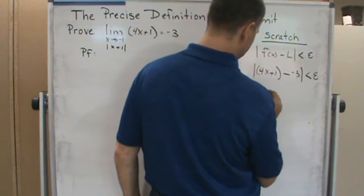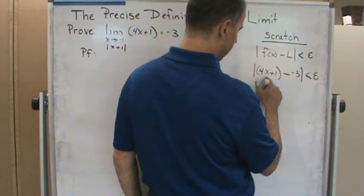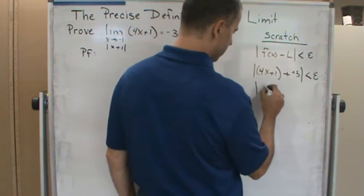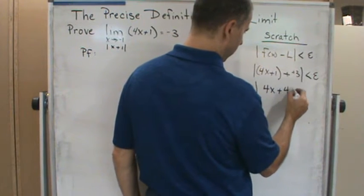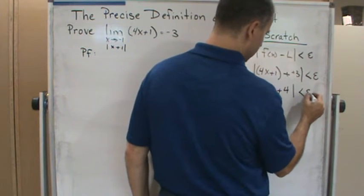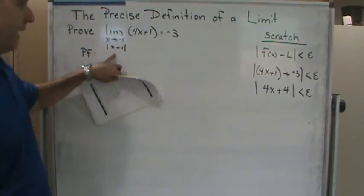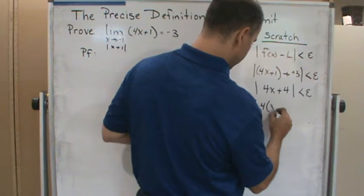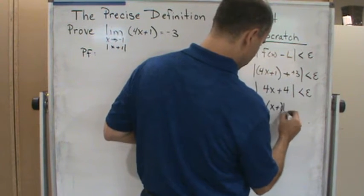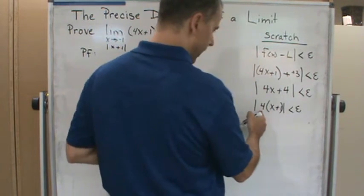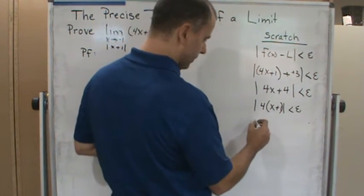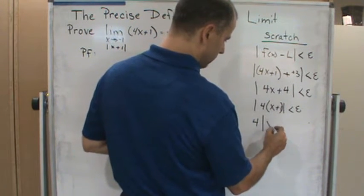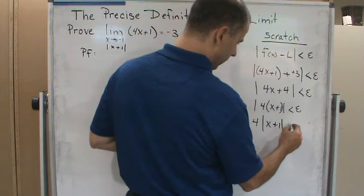So this is going to be plus 3, right? So this is going to become 4x plus 4 absolute value is less than epsilon. Now look at that. Now I can factor out a 4 and I've got it. So the absolute value of 4 times x plus 1 is less than epsilon. I can factor out the 4 because it's constant. This is just going to be 4 times the absolute value of x plus 1 is less than epsilon.